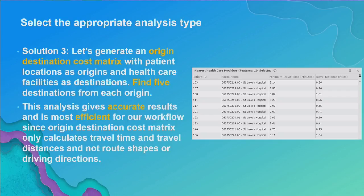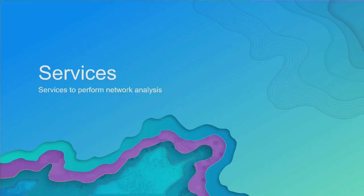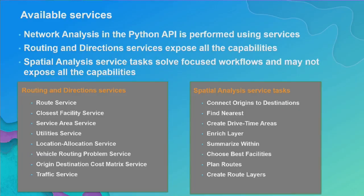The third and best approach is to use the OD cost matrix service, or origin-destination cost matrix. The OD cost matrix does the same analysis as closest facility — find five closest from each patient location — but it does not calculate actual routes or driving directions. It still measures time and distance on the network, so you get accurate analysis without the additional overhead computations you don't need. And it scales really well for the large problem size: every single patient location finding five healthcare facilities. This is the service you want to use.